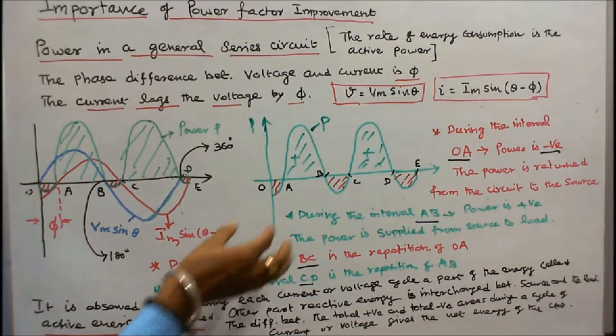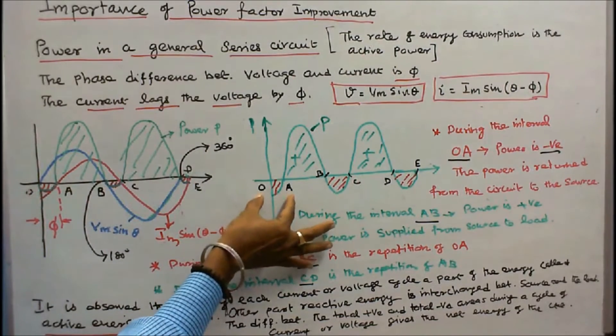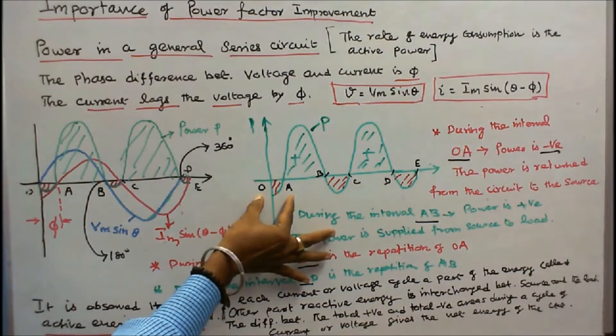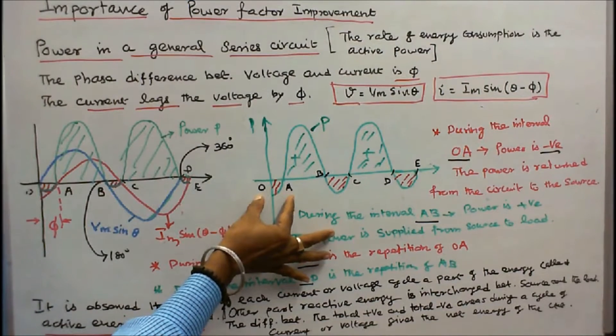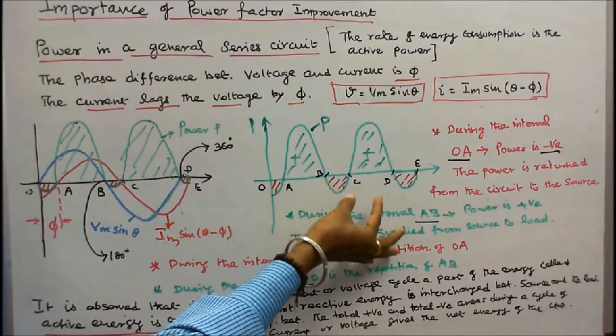During the interval O-A the power is negative. That means the power is returned from the circuit to the source.